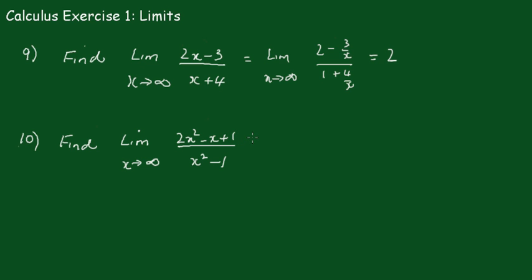Have a go at number 10. In this case, you may be tempted to factorize that. Actually, if you do, it'll reduce down to something simpler. But it's not necessary. What you do is divide numerator and denominator by x², whatever the leading power of the polynomial is. This is why this technique is so sweet. Dividing by x², you would have 2 - 1/x + 1/x², all over 1 - 1/x².